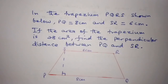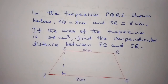In the trapezium PQRS shown below, PQ is equal to 8 cm and SR is equal to 6 cm. If the area of the trapezium is 28 cm², find the perpendicular distance between PQ and SR.